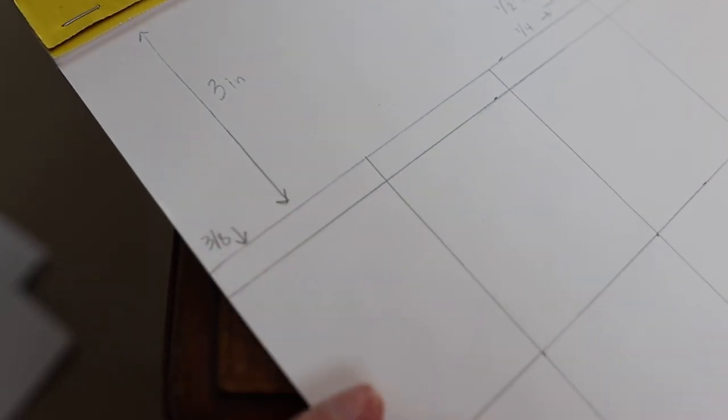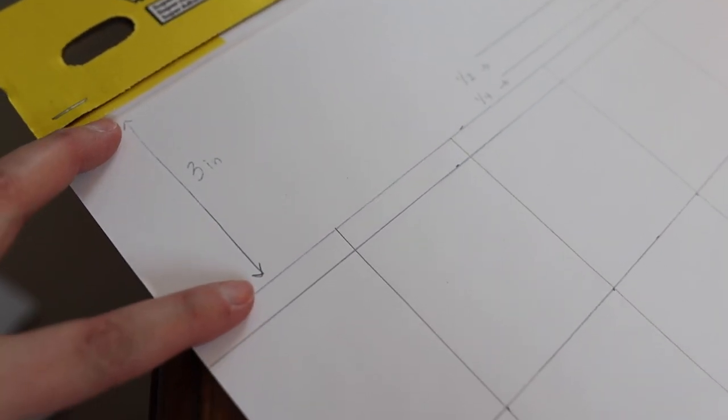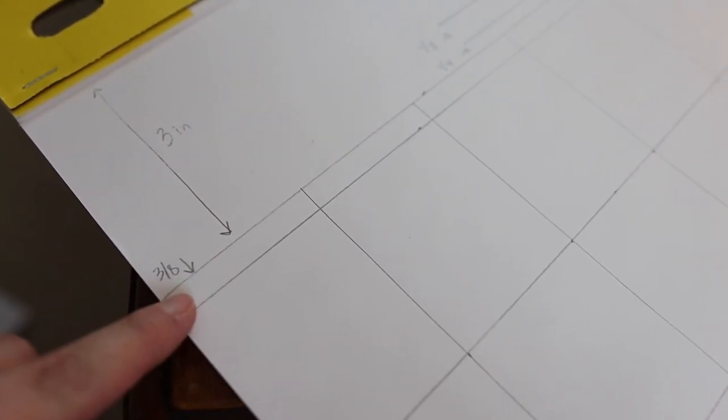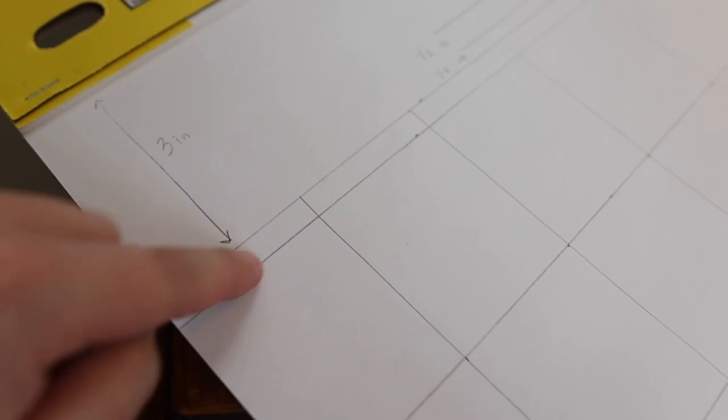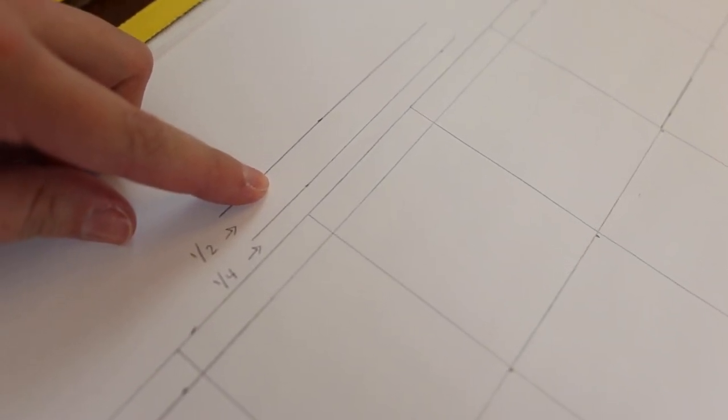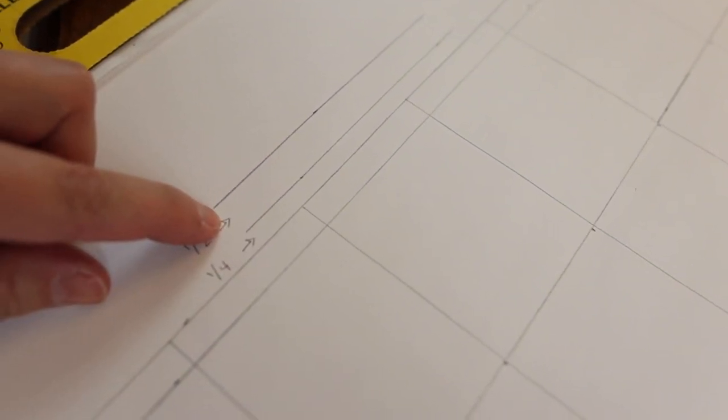And then up here at the top we are three inches from the very top. We have three-eighths of an inch for the day of the week up here at the top, and then where we're going to put the actual name of the month, we have a half an inch to write that, and it's a quarter of an inch from the top of the calendar.